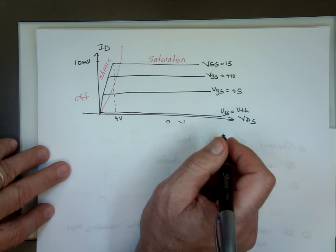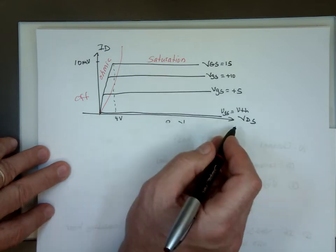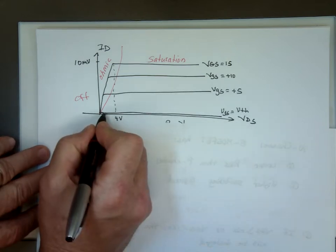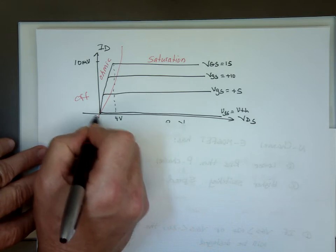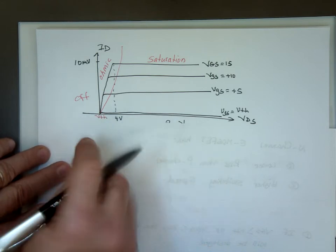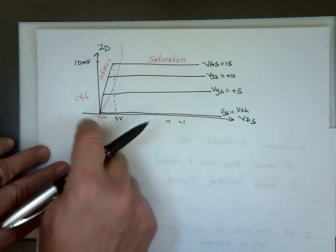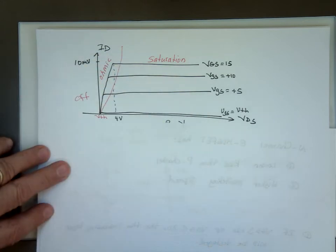Now, if the voltage is less than VT, even down here, actually my picture, that shouldn't be a zero, that should be VT here, threshold voltage. If you're less than the threshold voltage, you're actually in the off position.